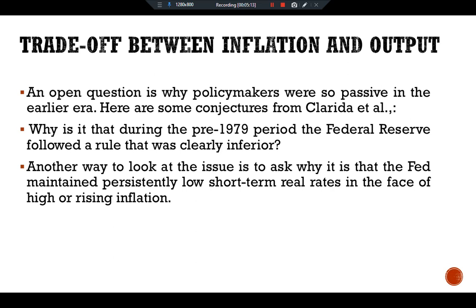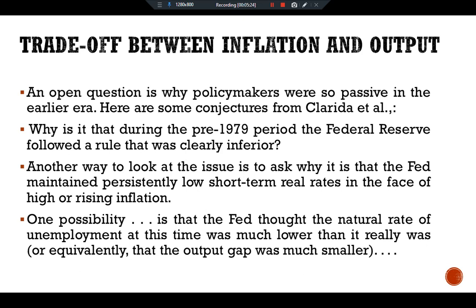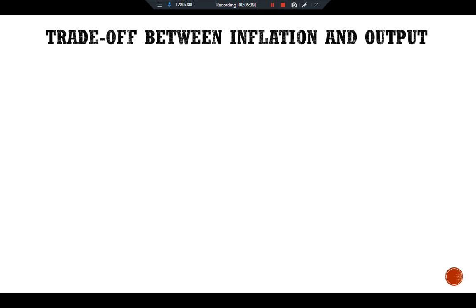One possibility is that the Fed thought that the natural rate of unemployment at this time was much lower than it really was, or equally that the output gap was much smaller than it actually was.